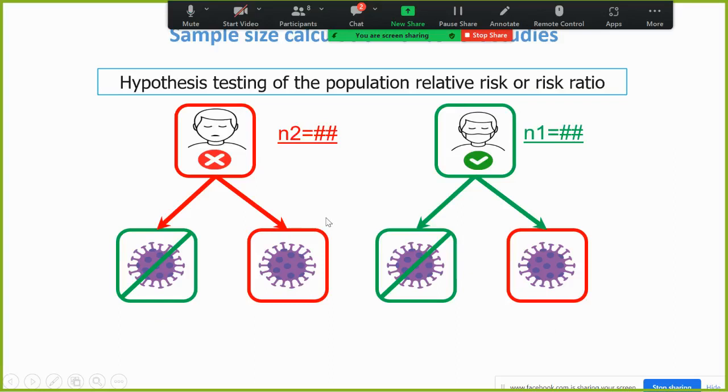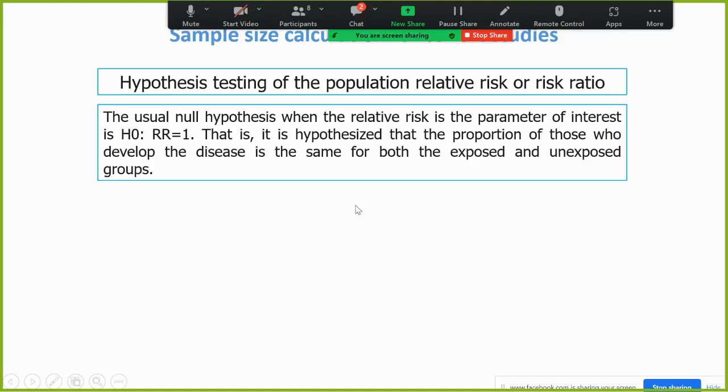Now how to calculate sample size in each group? But before calculating sample size, we have to write some narrative like this: the usual null hypothesis when the relative risk is a parameter of interest, that mean null hypothesis is one.